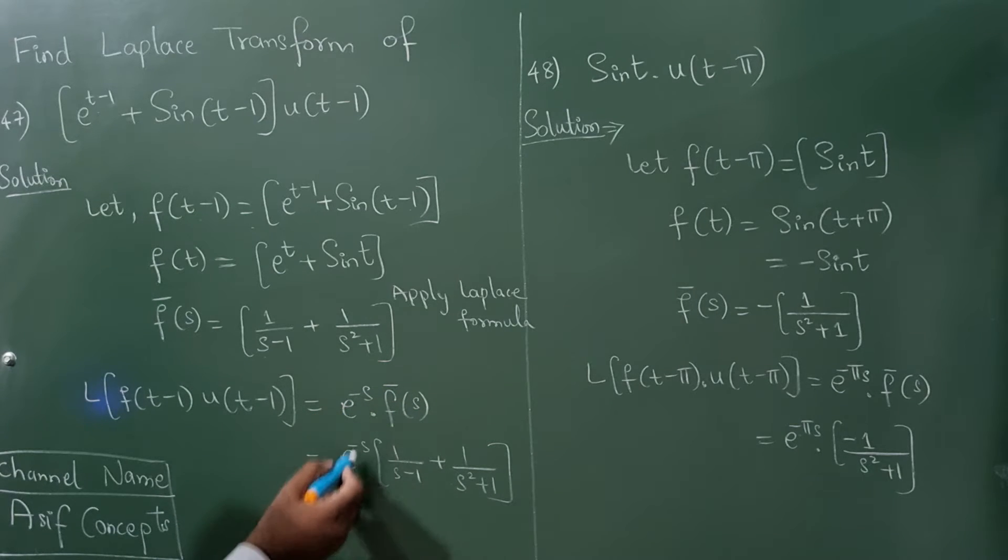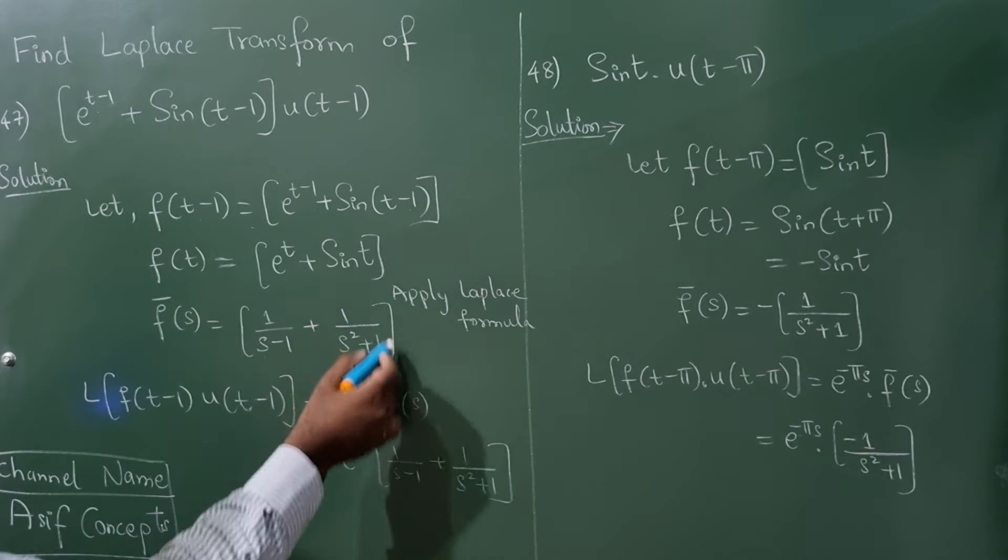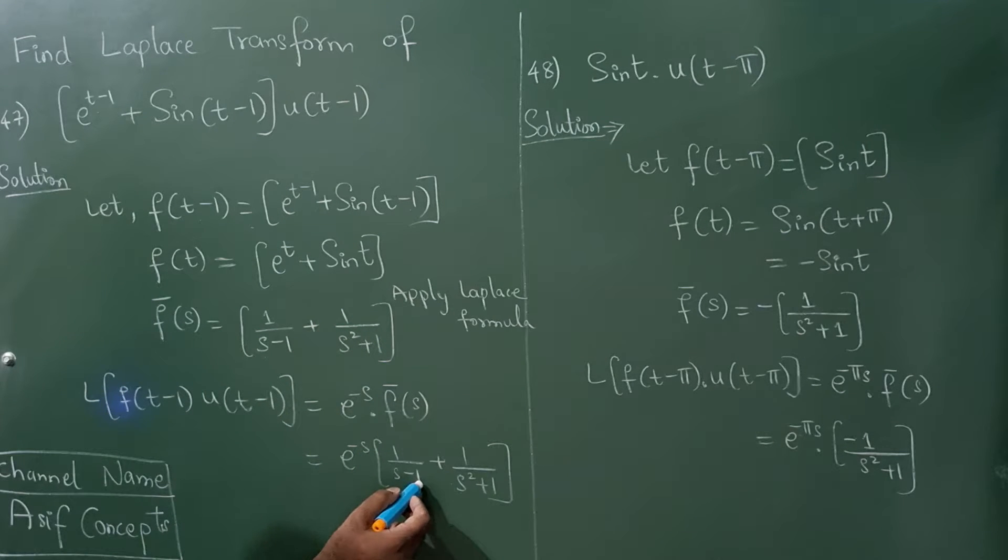Now this e raise to minus s write as it is and this you have to write 1 divided by s minus 1 plus 1 divided by s square plus 1.